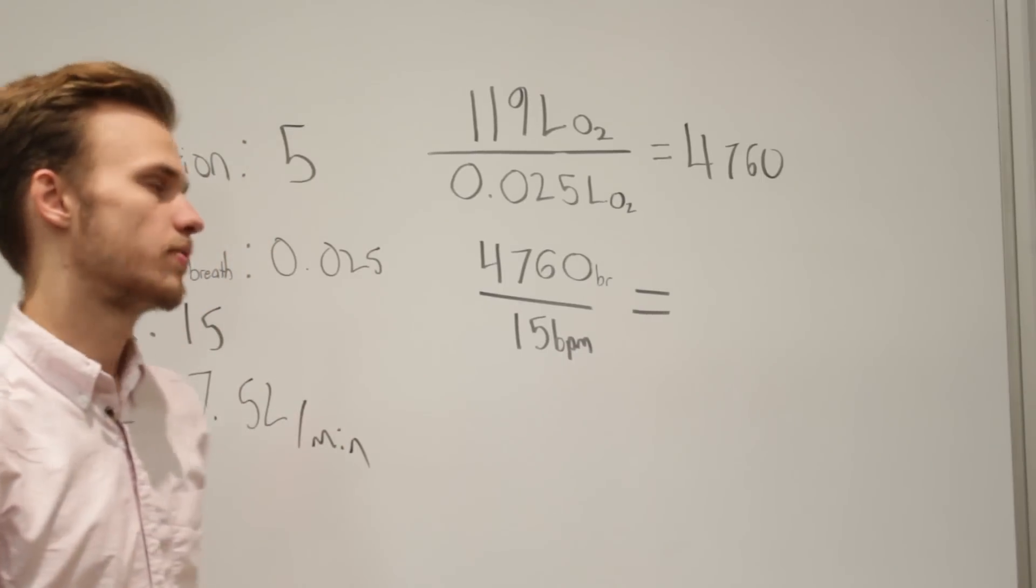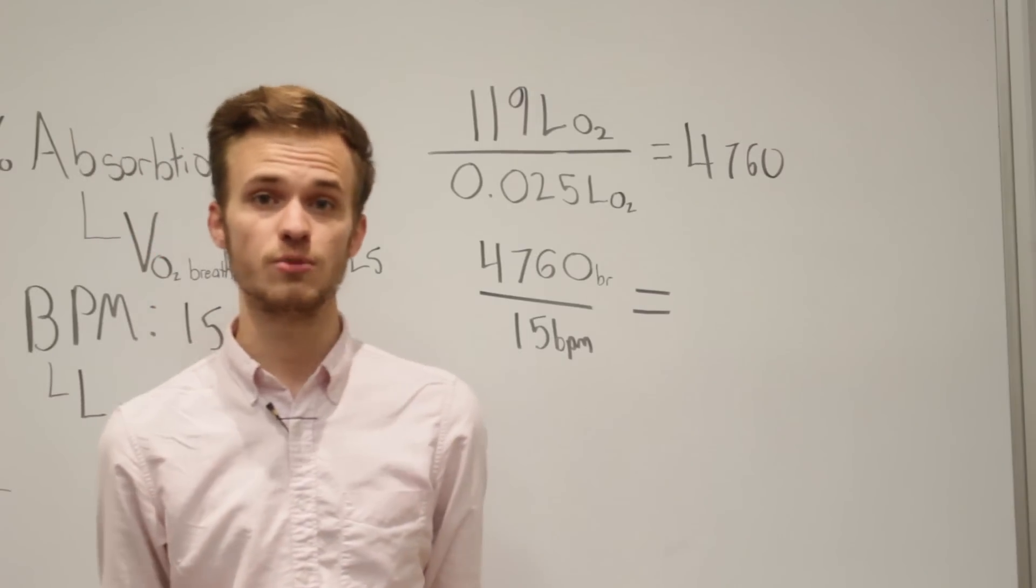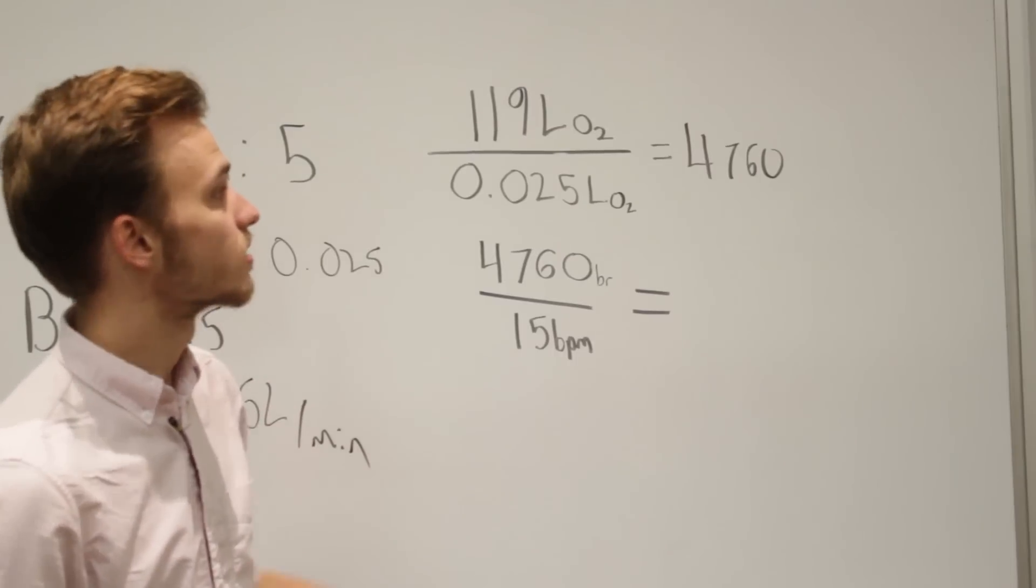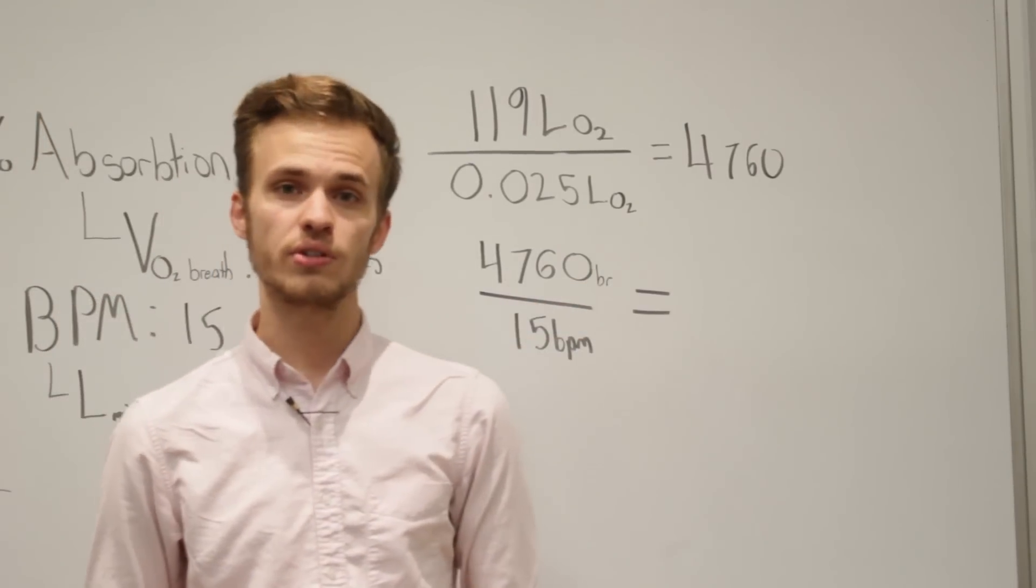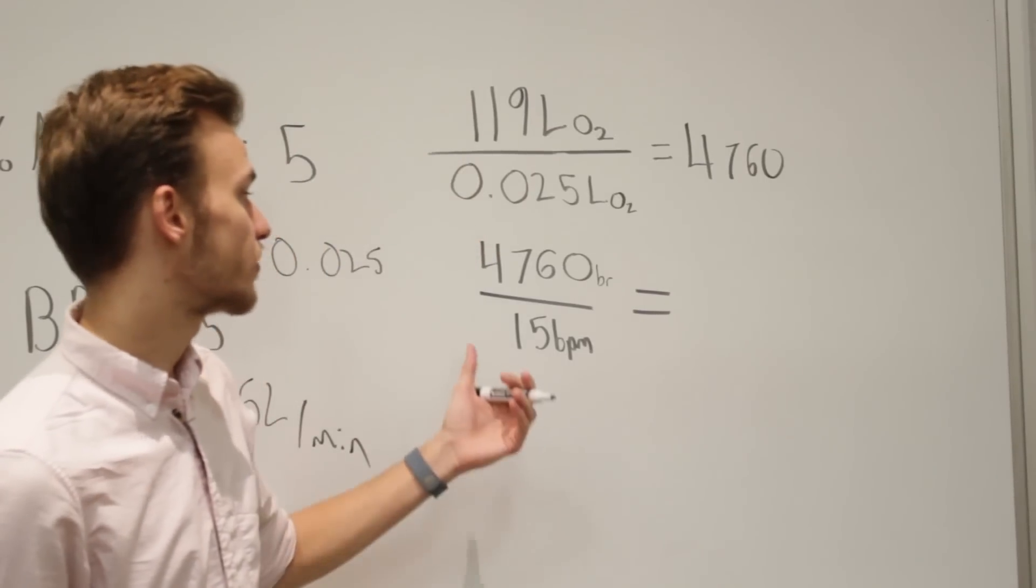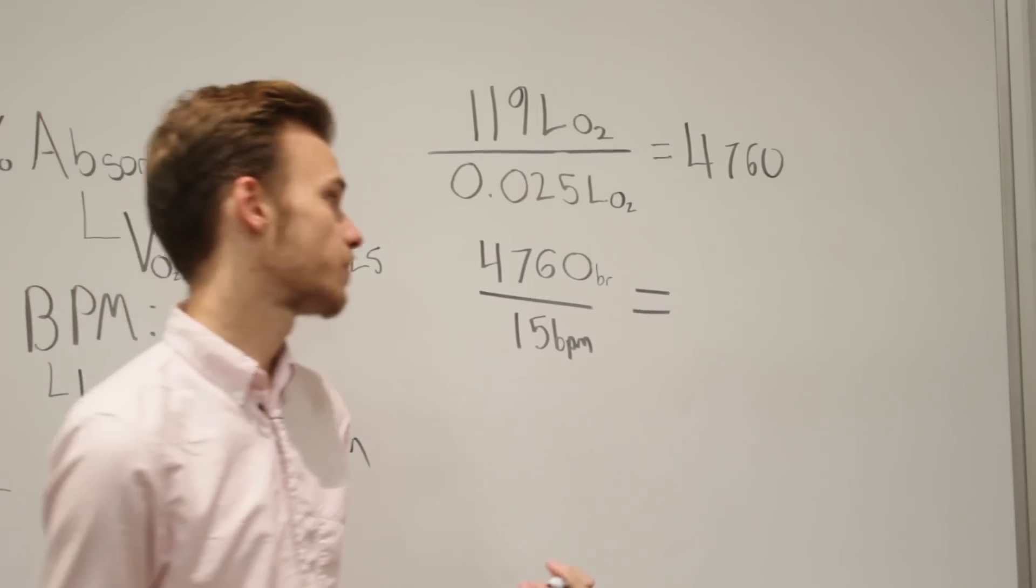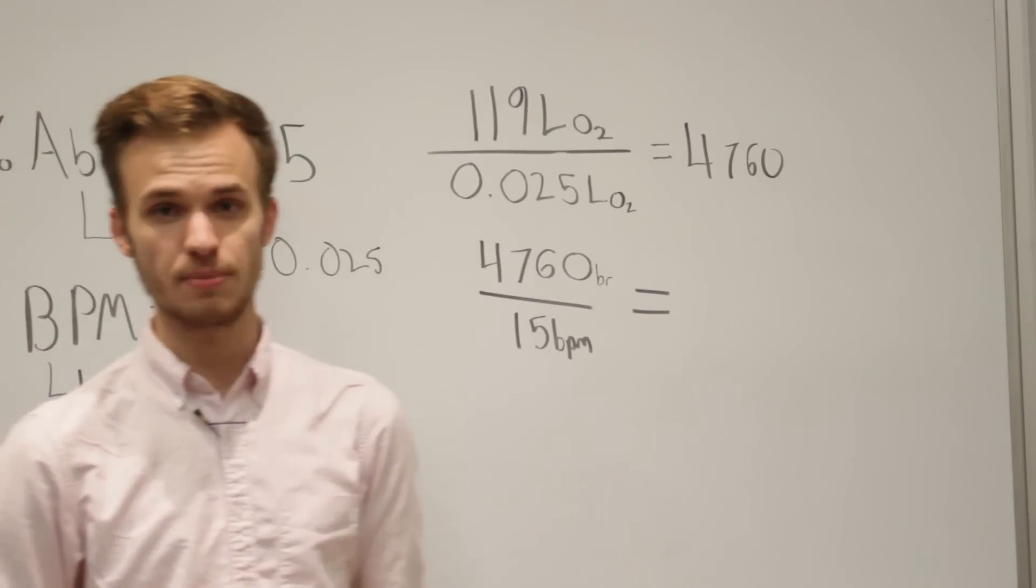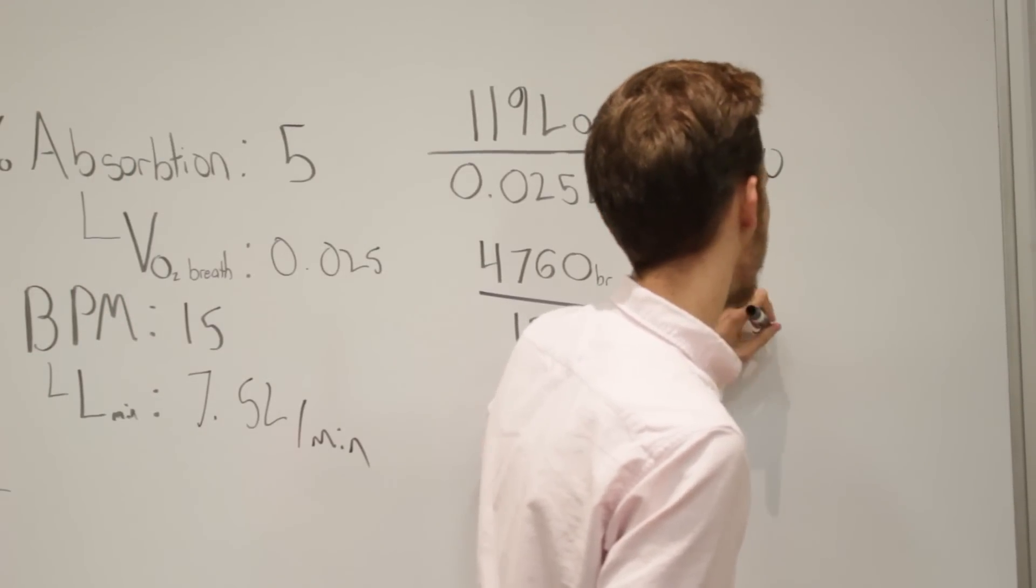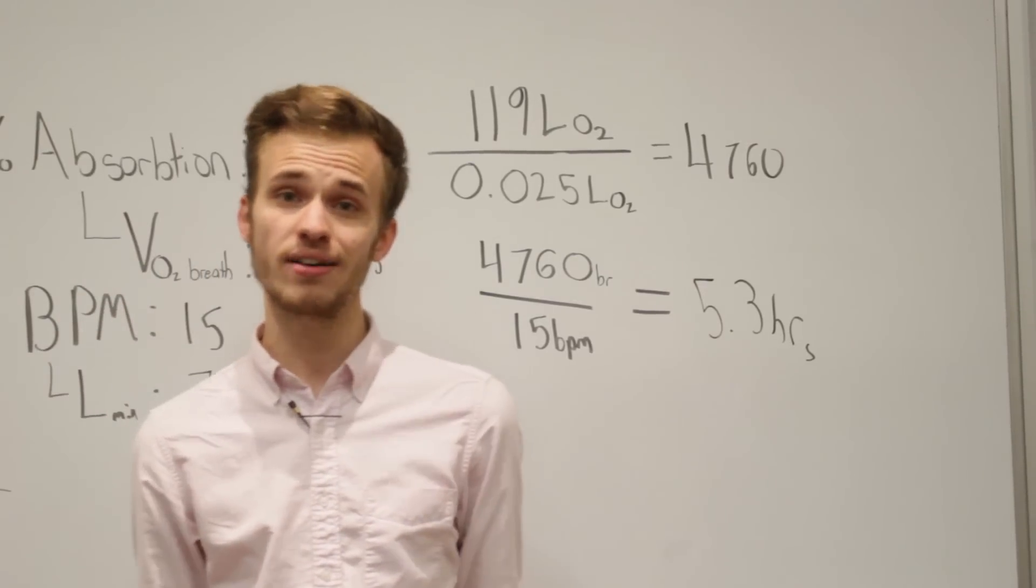So, we have 119 liters of oxygen within the car and 0.025 are used with each breath. Now, when we divide these, we can figure out the total number of breaths before the oxygen is depleted. 4760 is the number of breaths that you have before all of your oxygen is gone. Now we're going to divide that by 15 breaths per minute to figure out how long you would last. We divide 4760 by 15 breaths per minute and we get roughly 5.3 hours. So, in a perfect world, it would take 5.3 hours to use up all of your oxygen.